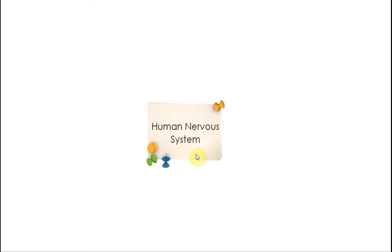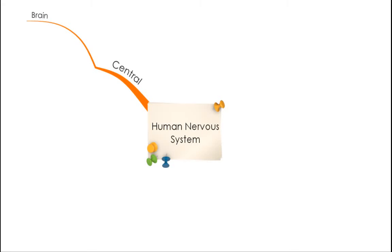Let's start with the human nervous systems. Under human nervous systems we will discuss the central nervous system, which consists of the brain and the spinal cord. After that we will discuss the peripheral nervous systems.